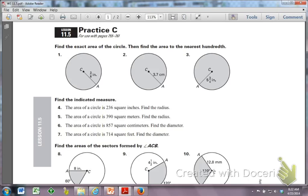So in the worksheet for the homework, 11.5, in the first section it says find the exact area of the circle, then find the area to the nearest hundredth. What they're really wanting to do here is learn the difference between what is an exact answer and what is an approximate answer. So in number one, we start with 3 eighths inch as our radius, so we're going to say the area of the circle is pi r squared.